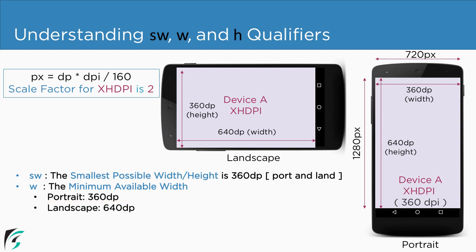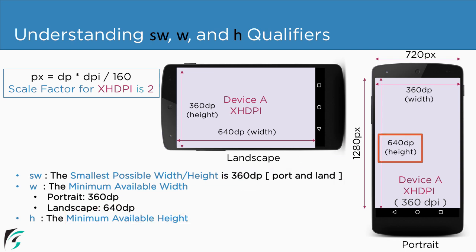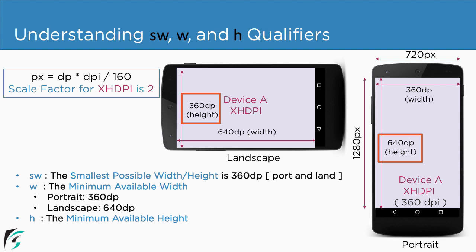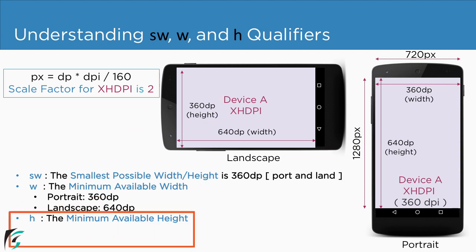Similar to W, we can define H as the minimum available height. For portrait mode, we have the minimum available height as 640. And for landscape mode, we have the minimum available height as 360. So here are the respective values for each orientation.